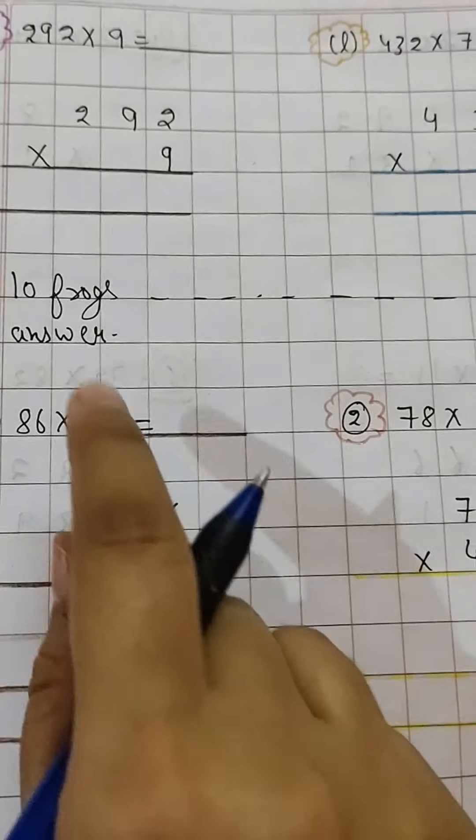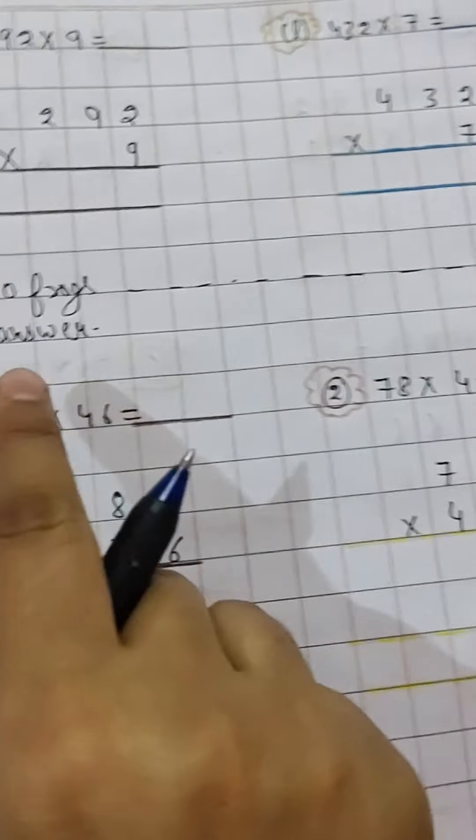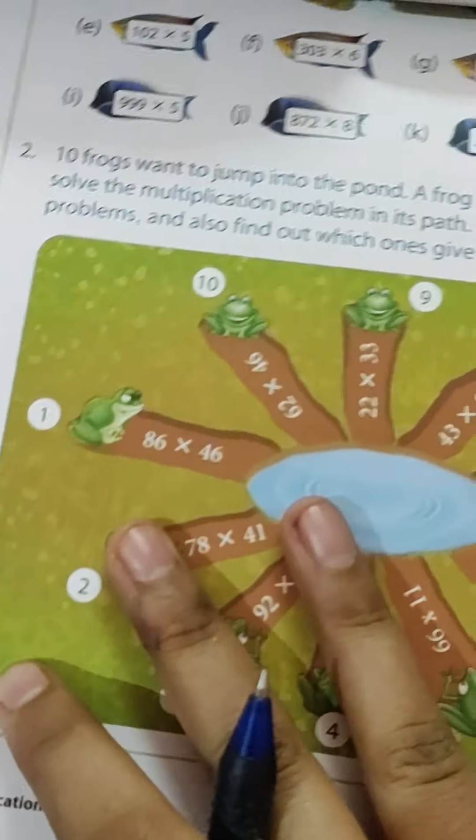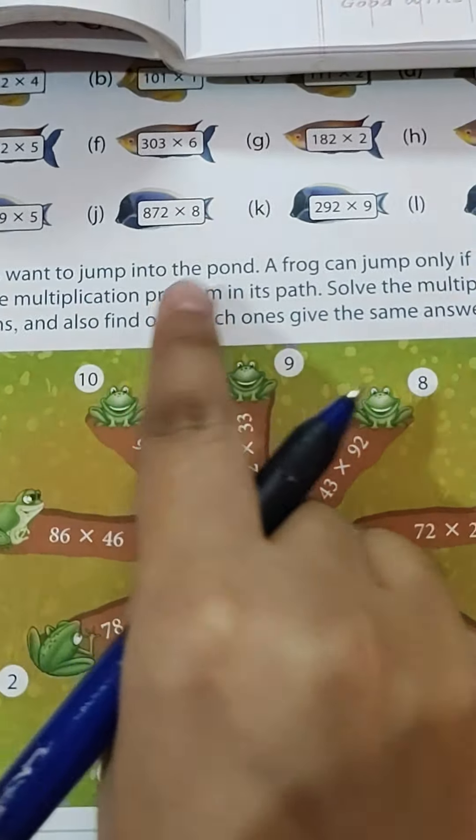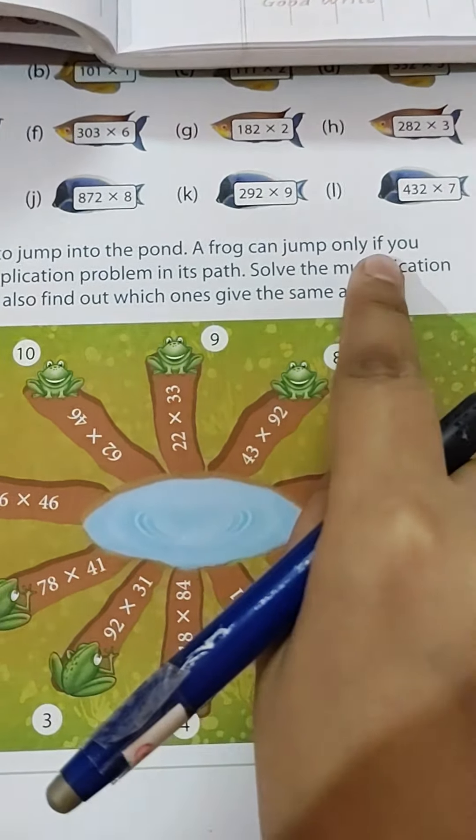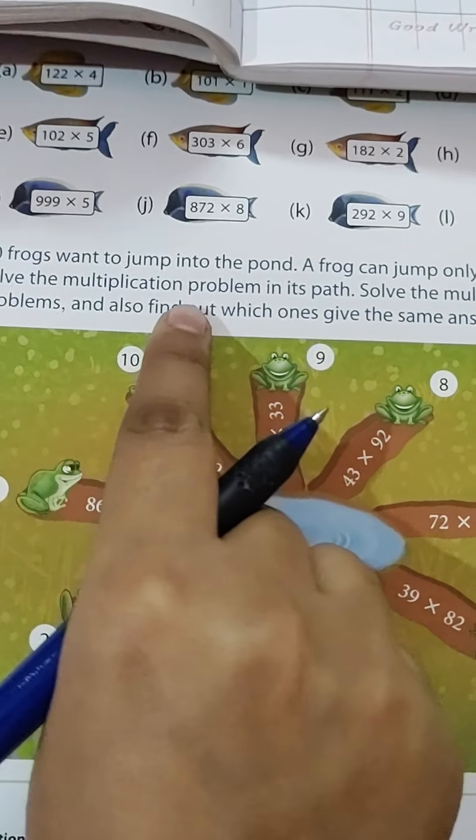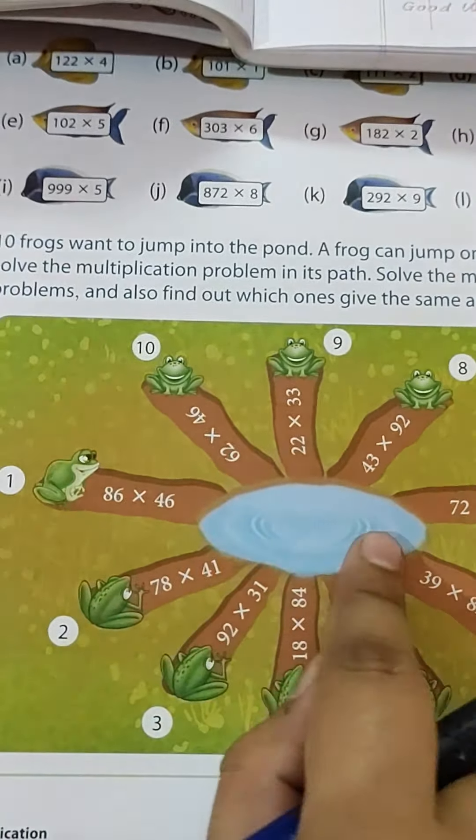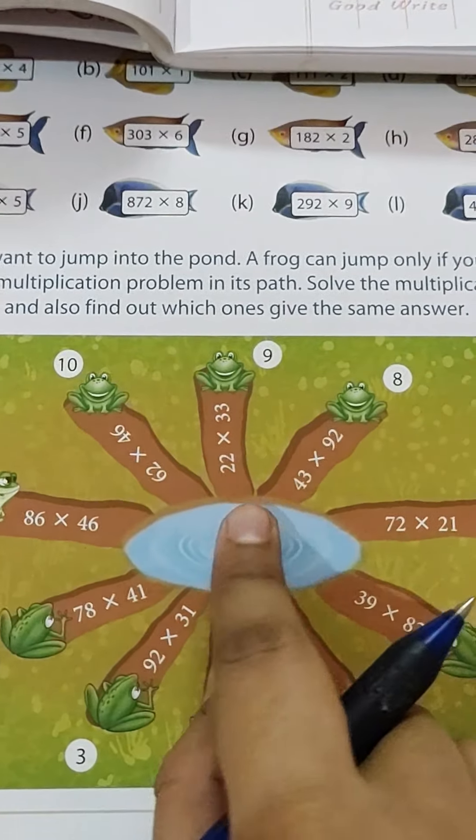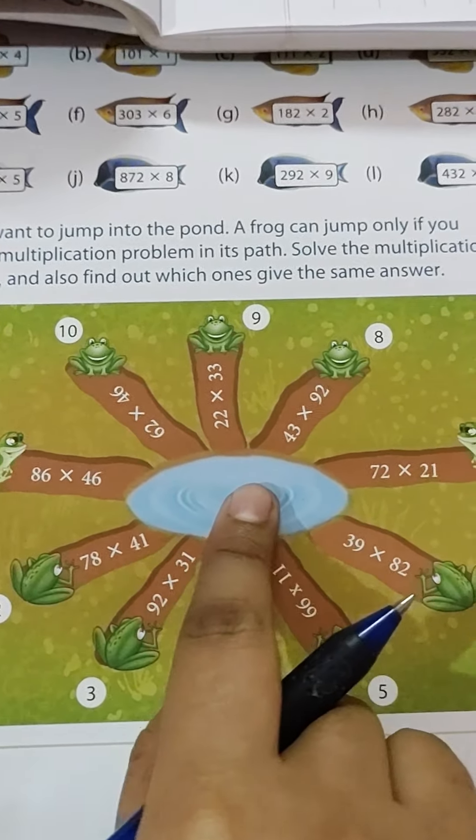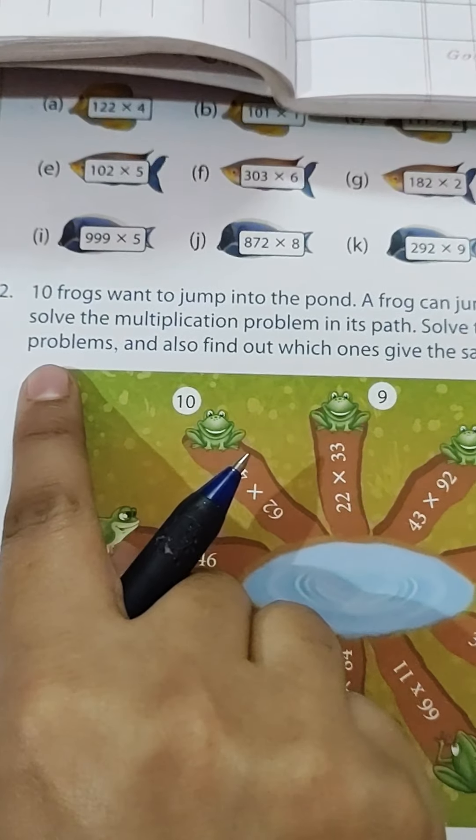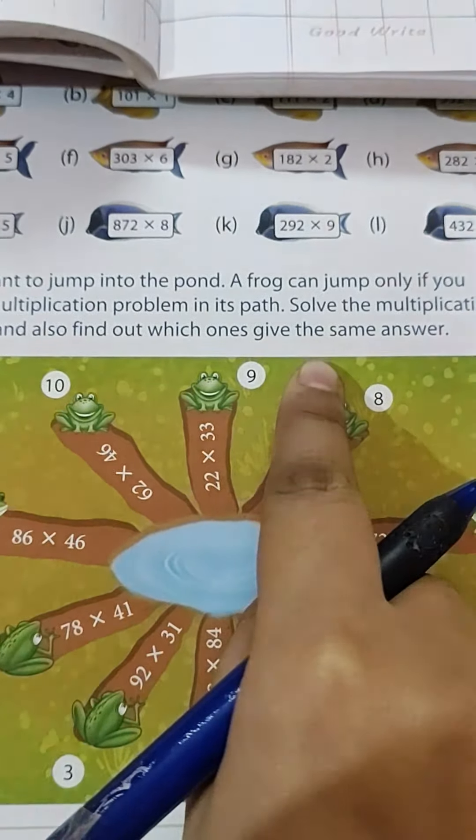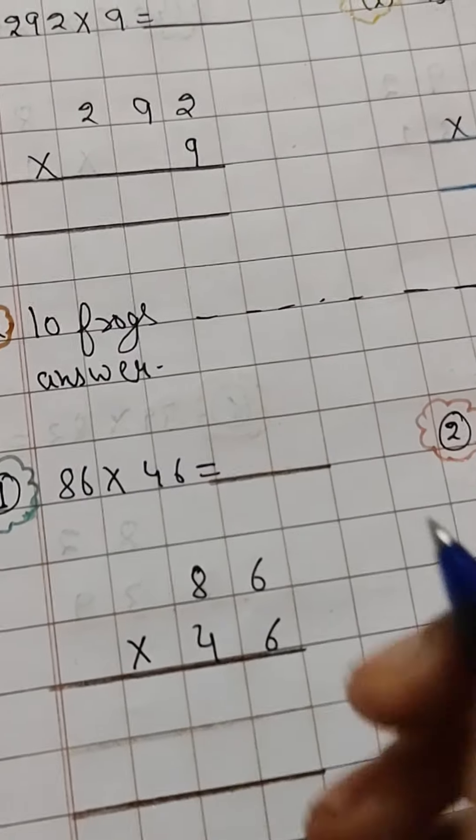Now next one is 10 frogs. I will show the question here. 10 frogs want to jump into the pond. A frog can jump only if you solve the multiplication problem in its path. Frog ko jump karna hai pond ke andar. Pond means talaab. They can jump only when you solve this multiplication problem.